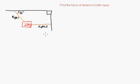This example asks us to find the force of tension in both ropes. We have a 25 kilogram mass in the middle, and we have two ropes holding it in place — rope number two and rope number one. We know that there's a 55 degree angle between rope one and the wall.